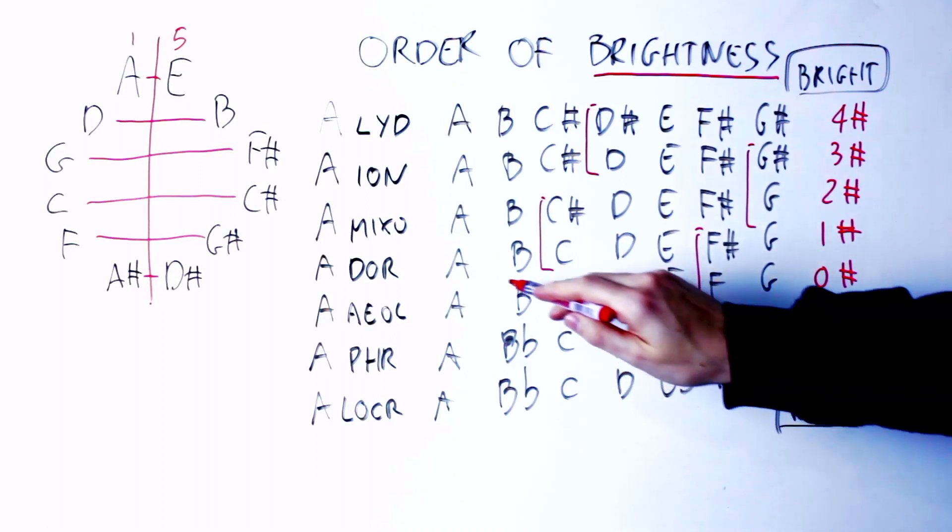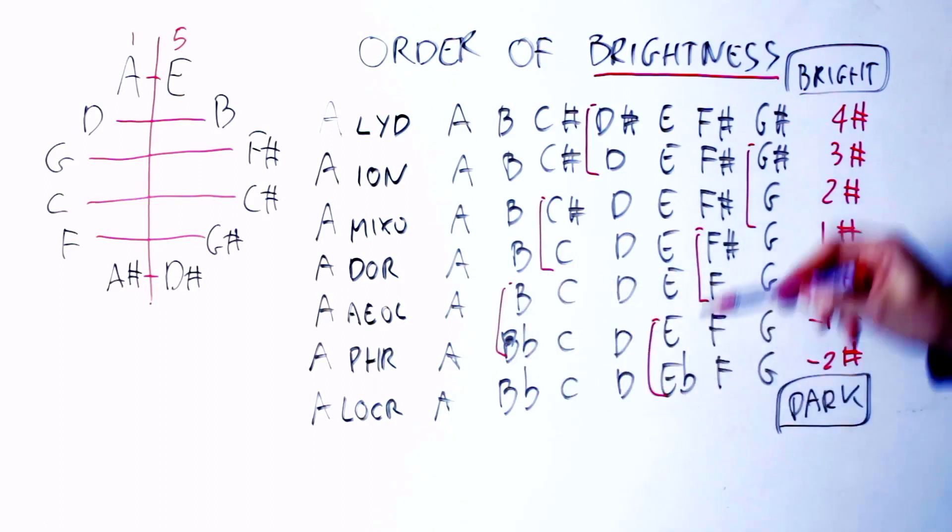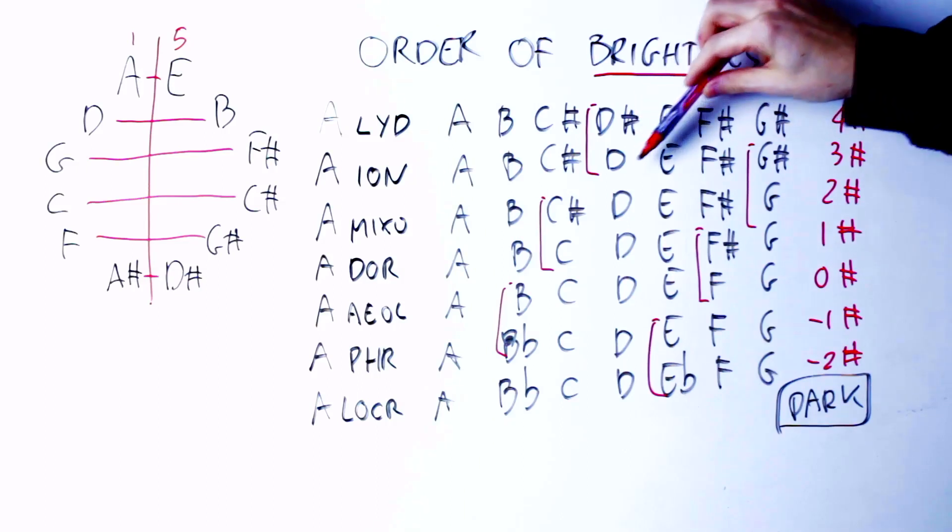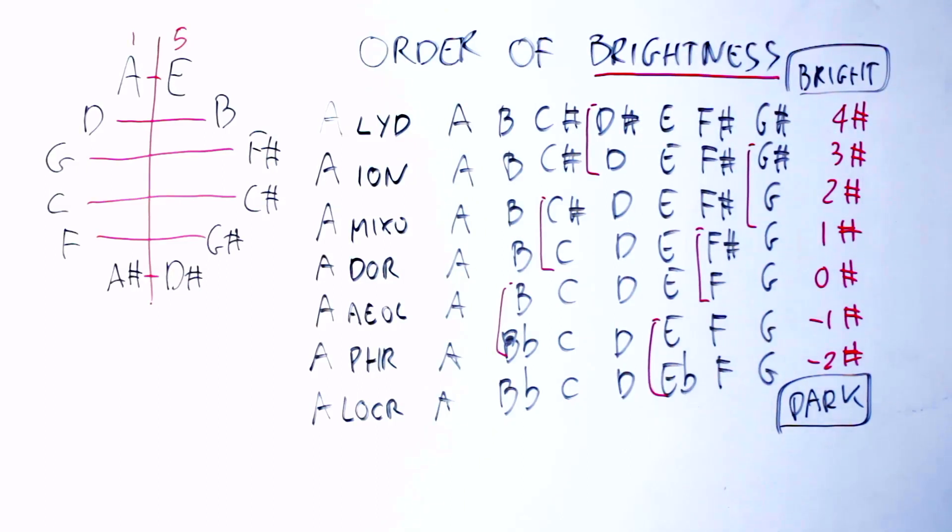That is, for instance, Lydian, A Lydian, and A Ionian only have this note of difference here, and all the other notes are the same. Then A Ionian and A Mixolydian have only this note of difference, and all the other notes are the same, and so on and so forth. Of course, there is much more to know about that, but this just gives you an idea on how powerful is this order of brightness, if nothing else, to remember the modes and have an idea what you can do with them.